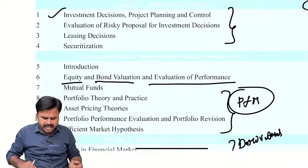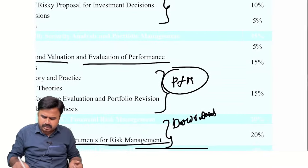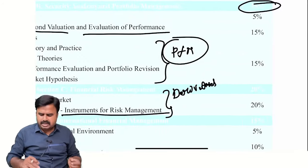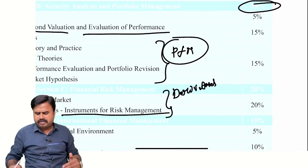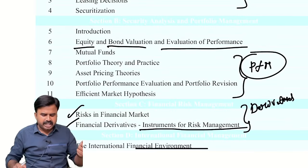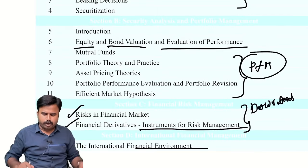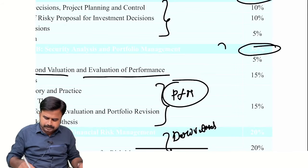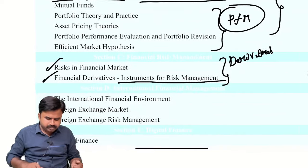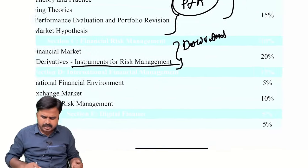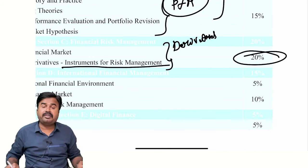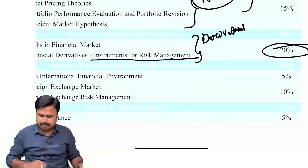Section B — covering equity valuation, bond valuation, mutual funds, and portfolio management — deals with 35% of the subject, meaning we can get 35 marks out of 100 from these topics. It is a very lengthy topic loaded with a lot of weight. Financial risk management and derivatives carry a weightage of 20%, meaning 20 marks out of 100.